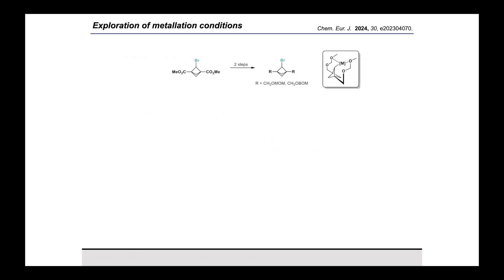To test this idea, we took this bromodiester, reduced it to the diol, and then protected the hydroxyl groups as their methoxymethyl or benzyloxymethyl ethers. We selected these protecting groups in particular for their stability to the intended reaction conditions, and also the possibility that they might offer coordinative stabilization to the proposed intermediate BCP organometallic.